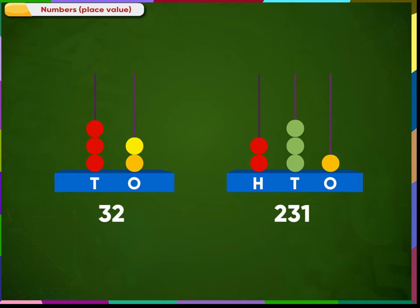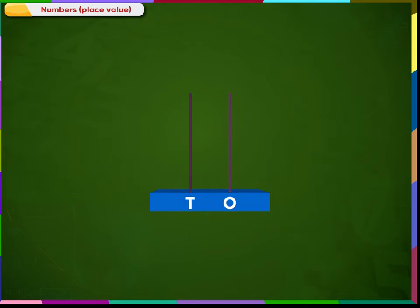The digits are represented using beads. In a two-spike abacus, the spike on the right side denotes digits at one's place and the spike on the left side denotes digits at ten's place. For example, the number five is represented with five beads at the one's place.